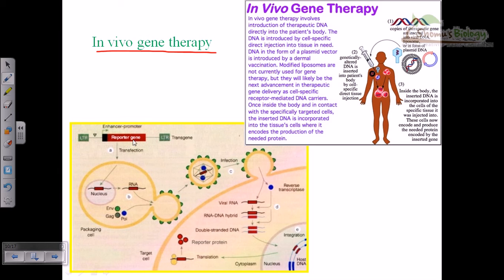Here is the detailed mechanism. The gene has LTRs at both ends, and in between we have the reporter gene, which tells us whether the gene is properly inserted inside the body or not. We transfer this into a packaging cell line. There are two different cells: the packaging cell line and the target cell line. The packaging cell line is a complementary cell line on which the delivery vehicle is generated or produced.